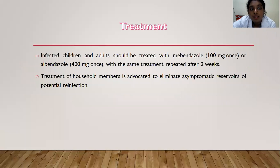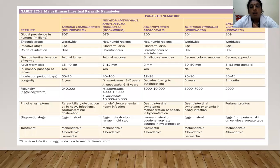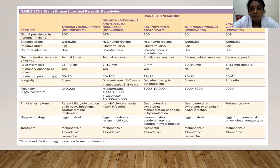Treatment of Enterobiasis: infected children and adults should be treated with mebendazole 100 mg once or albendazole 400 mg once, with the same treatment repeated after two weeks. Treatment of household members is also advocated to eliminate asymptomatic reservoirs of potential reinfection. A summary table comparing all parasitic intestinal nematodes — Ascaris lumbricoides, Necator, Strongyloides, Trichuris, and Enterobius — covers their key distinguishing features. Thank you.